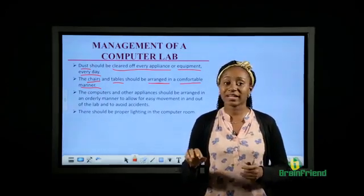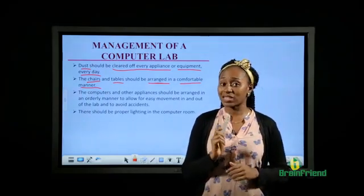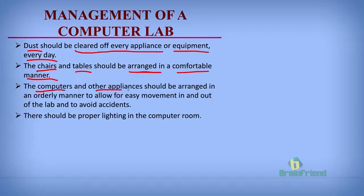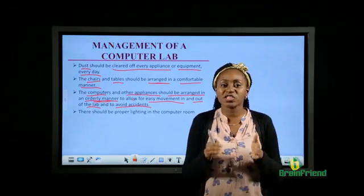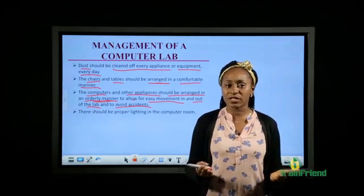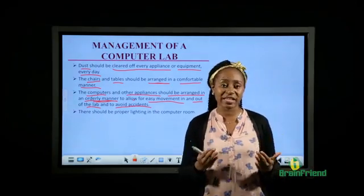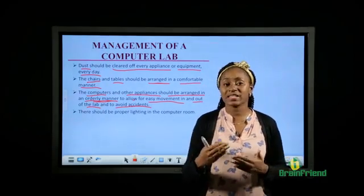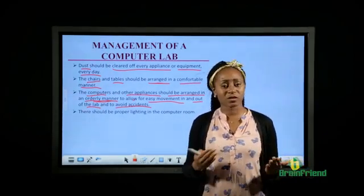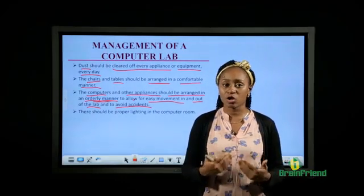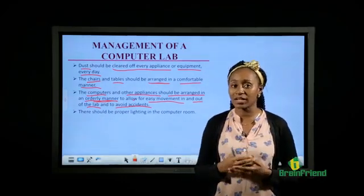The computers and other appliances should be arranged in an orderly manner to allow for easy movements in and out of the lab to avoid accidents. If the computers are all arranged in a closed up manner, there will be no easy movements in a lab. And also, if things are kept haphazardly, it is possible that someone could trip in the course of navigating his way in a computer lab.